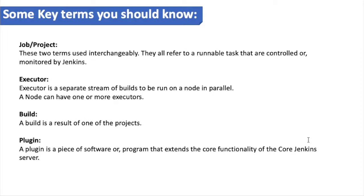When you set up Jenkins you will find terms like job and project — these two are used interchangeably and refer to a runnable task that is controlled or monitored by Jenkins. An executor is a separate stream of builds to be run on a node in parallel; a node can have one or more executors. Whenever a job is triggered, that executor will run and execute the job.